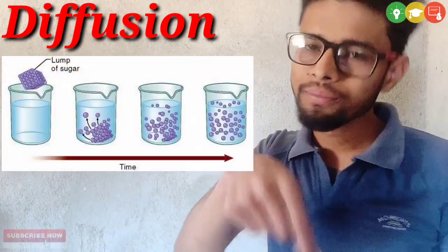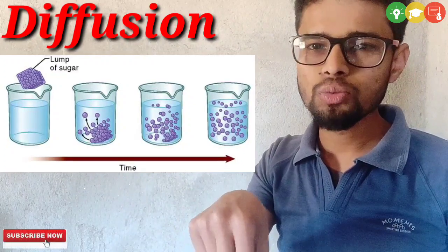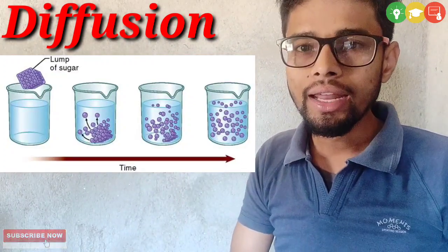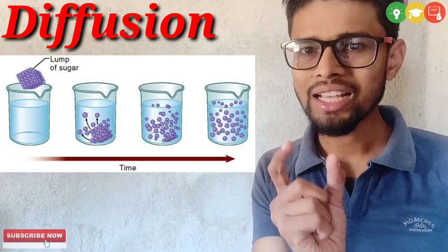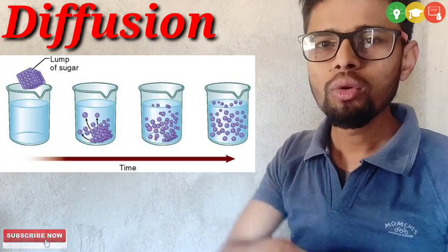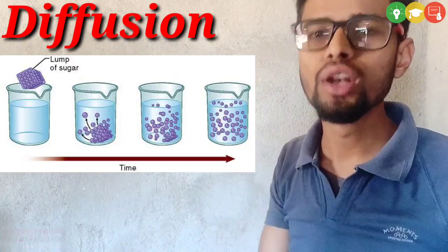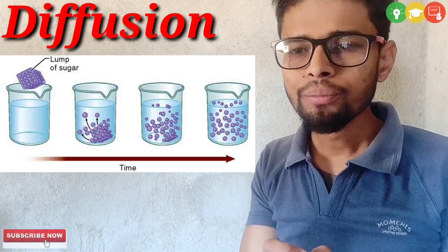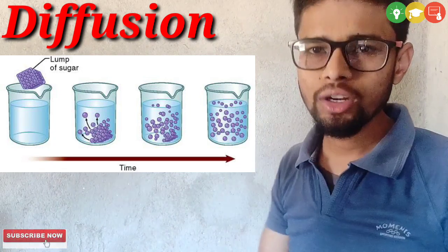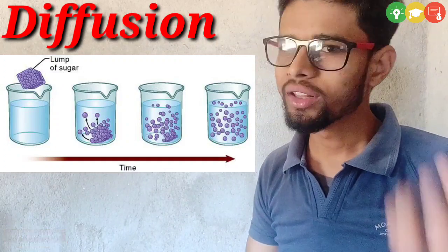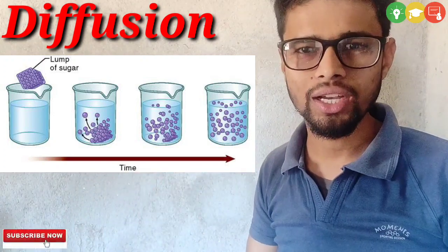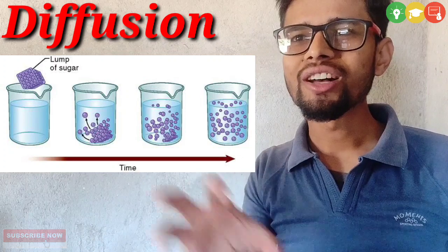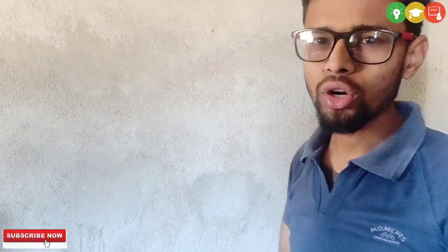One more basic example: if you mix sugar in water and stir it with a spoon, it will get mixed easily. But once the water is saturated with sugar molecules, you can put it over the gas stove — raising the temperature — and it will start to dissolve more sugar.